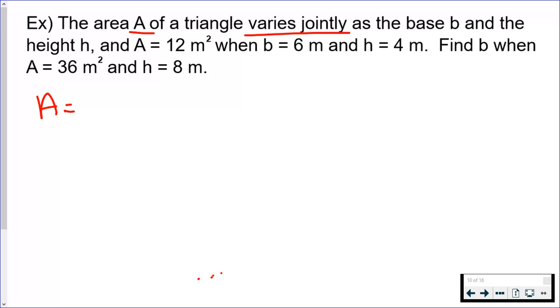I know that A equals—it varies jointly as the base b and the height h. So what this means is in addition to it equaling that constant multiplied by something, that something is actually two variables this time: the base b and the height h. So A is equal to whatever constant you want to use. I'm going to keep using k times b times h. This is a joint variation because I have multiple variables on that right hand side.